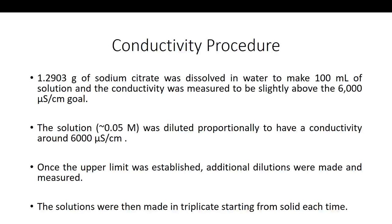To actually measure the conductivity, we first took about 1.3 grams of sodium citrate and dissolved it in 100 milliliters of water to make an approximately 0.05 molar sodium citrate solution, which had a conductivity slightly above 6,000 microsiemens per centimeter. We then diluted it to a solution with a conductivity of around 6,000 microsiemens per centimeter, because we were told that this is the linear range for conductivity. We made five dilutions approximately equally distributed throughout the range, and made every solution in triplicate starting from solid each time.